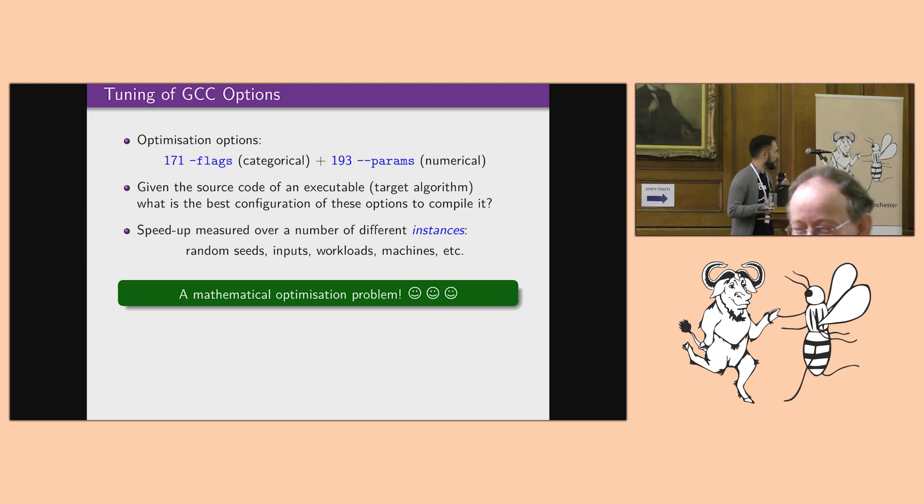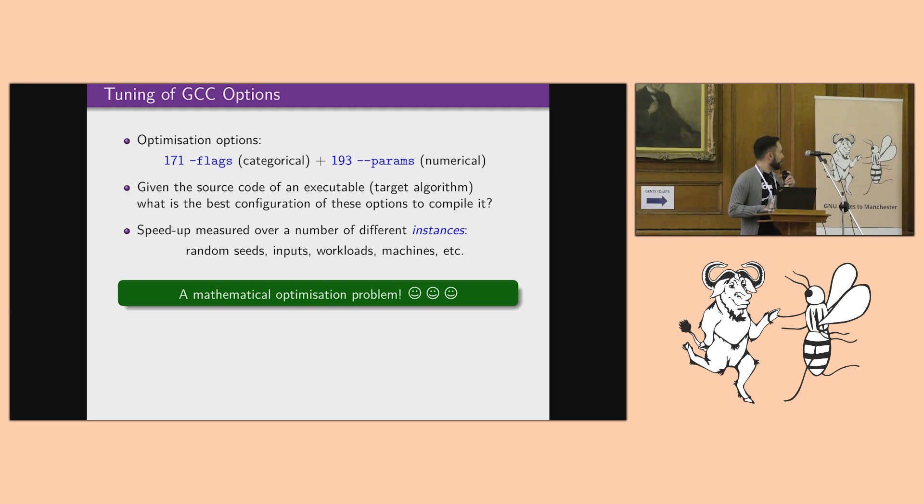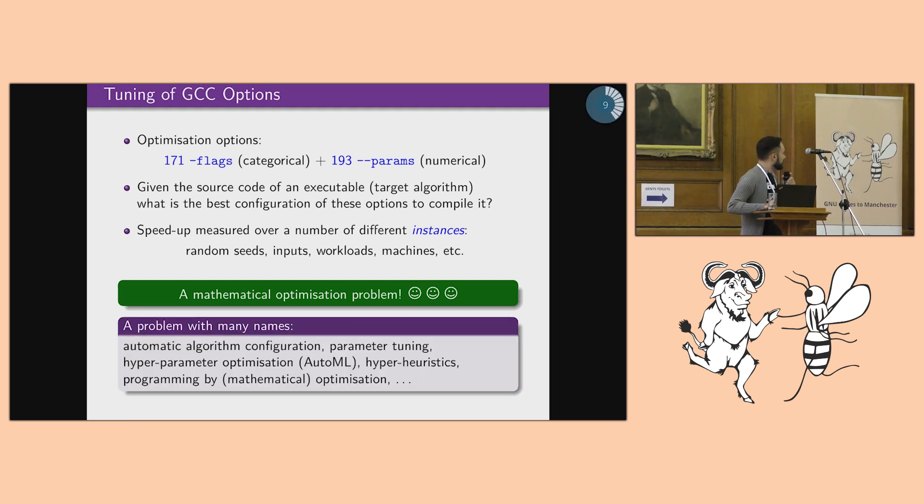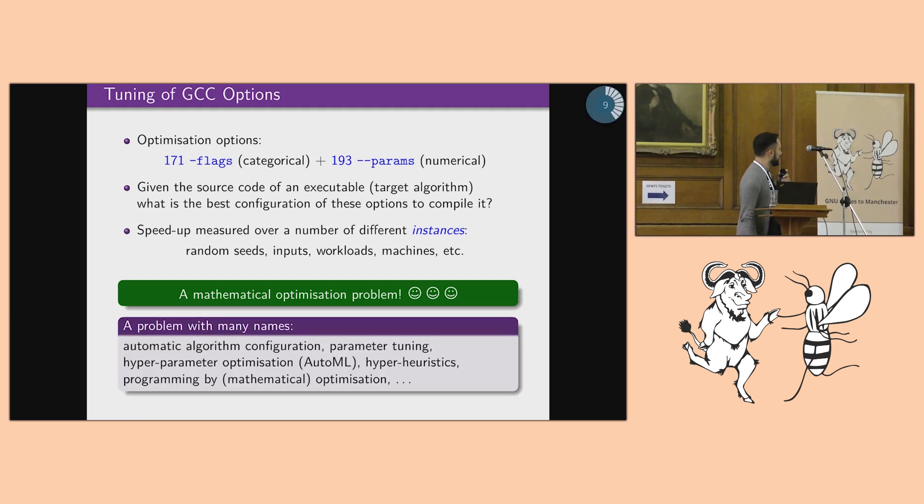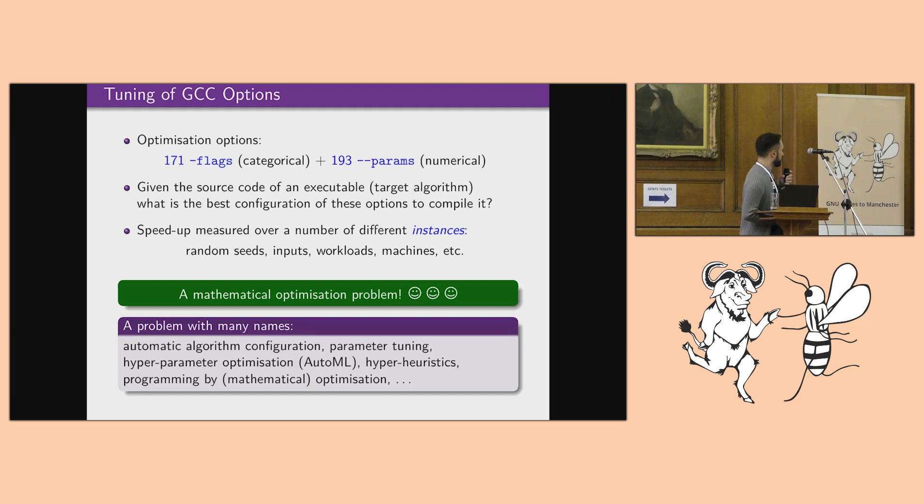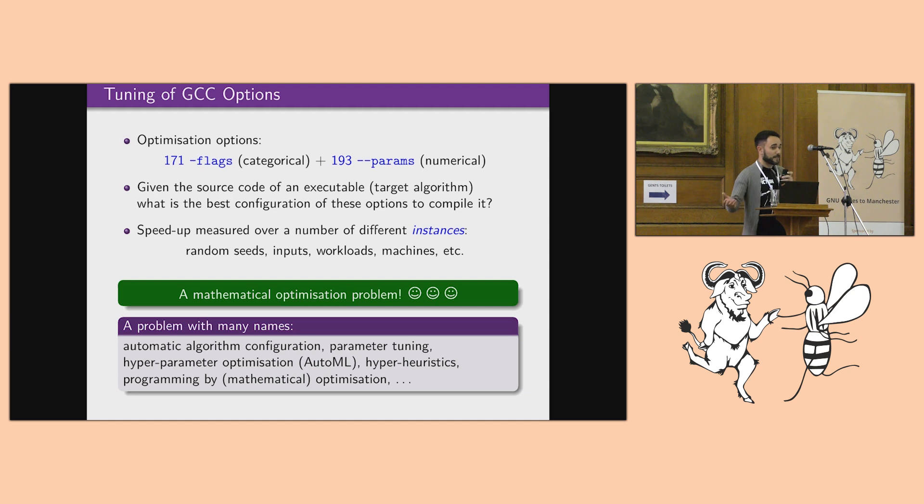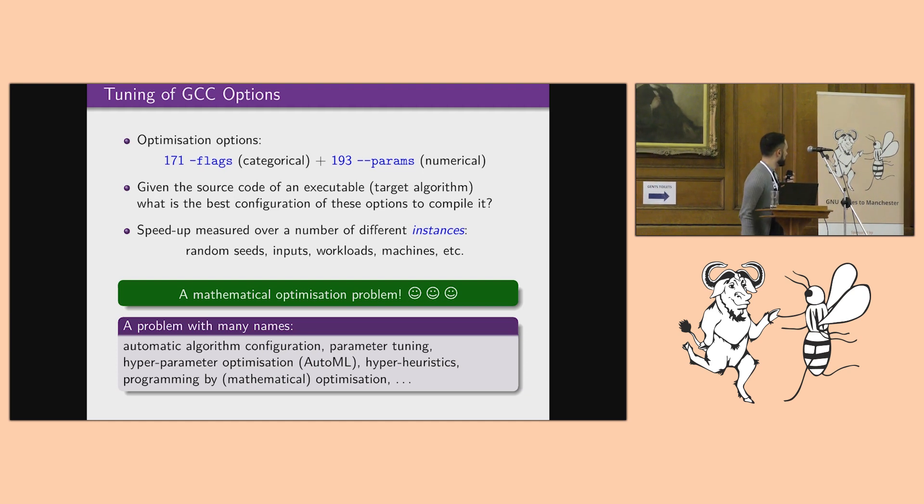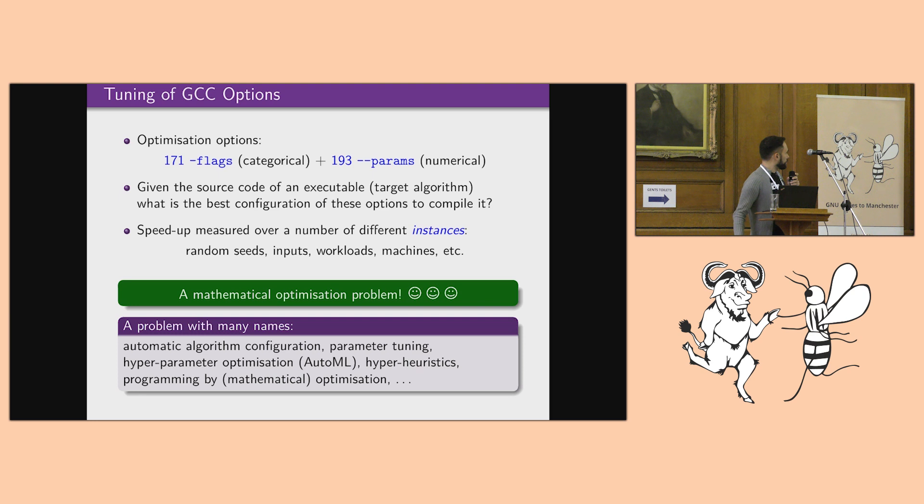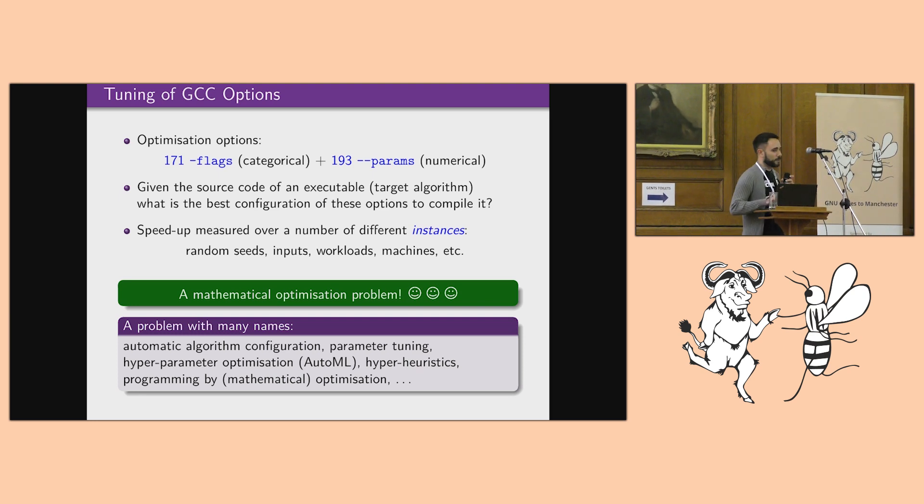So that makes me very happy because this is what I do, mathematical optimization. And it's actually a problem with many names in the research literature, so you can find automatic algorithm configuration. In machine learning they have a similar problem that is called hyperparameter optimization, and there is some generalizations that are called programming by optimization.